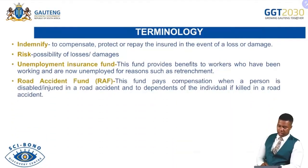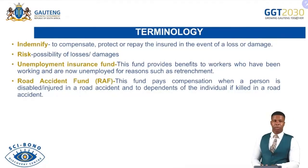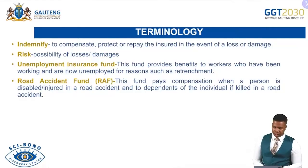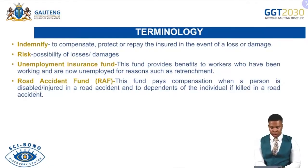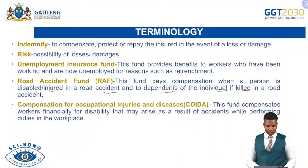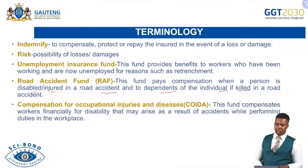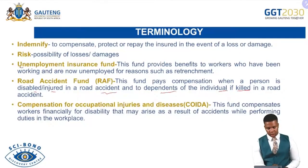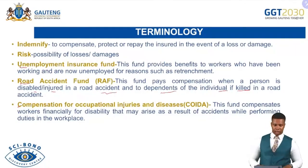The Road Accident Fund is a fund which pays compensation — to compensate is to basically replace. This fund compensates when a person is disabled or injured in a road accident, and also for the dependents of individuals who might be killed in a road accident. Then we have Compensation for Occupational Injuries and Disease. From the Unemployment Insurance Fund, Road Accident Fund, and Compensation Fund, we consider those three to be compulsory insurance.